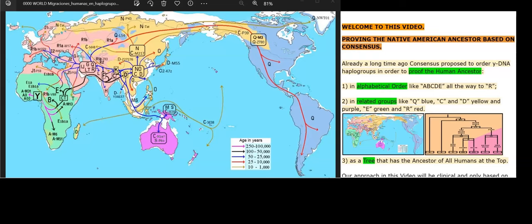Welcome to this video. Proving the Native American ancestor based on consensus. Already a long time ago, consensus proposed to order Y-DNA haplogroups in order to prove the human ancestor.